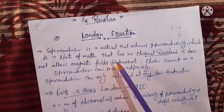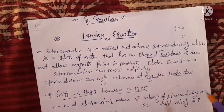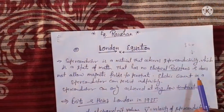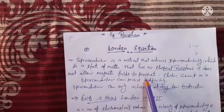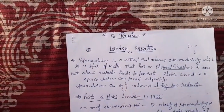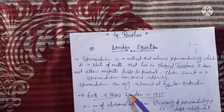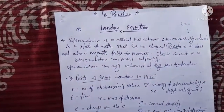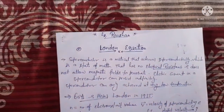Now we discuss some theoretical topics. A superconductor is a material that achieves superconductivity, which is a state of matter that has no electrical resistance — that means it has no electrical resistance — and does not allow magnetic field to penetrate. Electric current in a superconductor can persist indefinitely. A superconductor can only be achieved at very very low temperature.